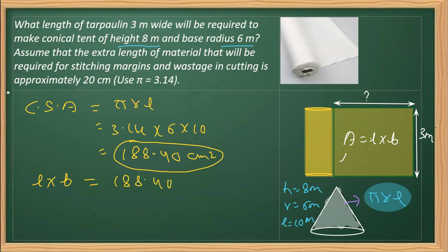Further, we know the width of the material is given as 3 meters. So we'll replace this breadth with 3 equals 188.40. Now, transposing 3 to the other side, it is 188.40 over 3. We'll reduce it, 188.40 divided by 3 will give you 62.8 meters.